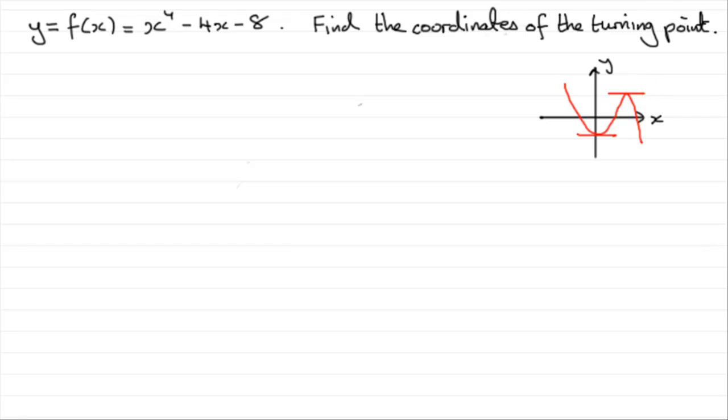To get that gradient we need to find dy by dx. So that's where we start. Therefore dy by dx equals, and if we differentiate this in the normal way, we get 4x cubed. And differentiate minus 4x, you get minus 4.